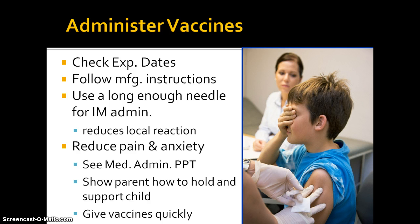I put this picture in here specifically to show you a bad picture. If you look at what the nurse is doing giving this injection, it's bad technique. The nurse's fingers are very close to the injection site as she's pulling out the needle. When you're finished injecting the vaccine, move your fingers away from the injection site and then remove the needle from the child's arm. This nurse is at very high risk for a needle stick injury because her fingers are so close to the needle coming out of the child's arm.